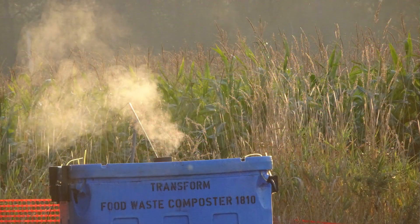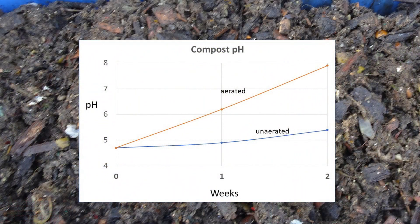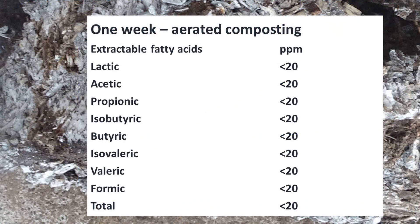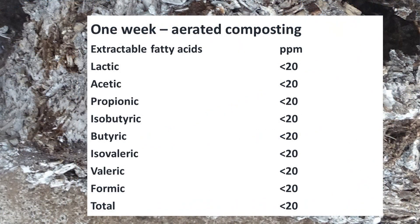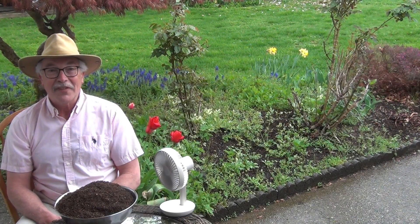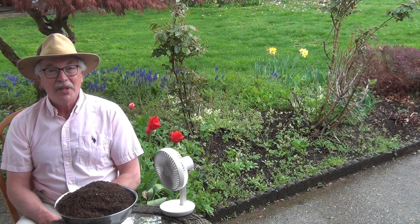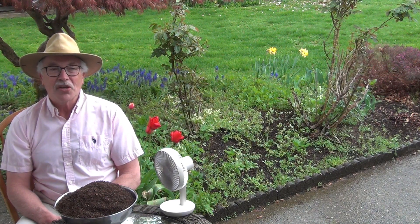Let's see what happens to both the pH and the volatile acid profile when we blend it with bulking agent and give it lots of air. The pH increased to almost 8 after two weeks of aeration but hardly increased when there was no aeration. After one week of adequate aeration, all of the volatile fatty acids are gone. Not only are no more volatile fatty acids produced, but the ones that were there were rapidly decomposed, and the odor is gone as well.